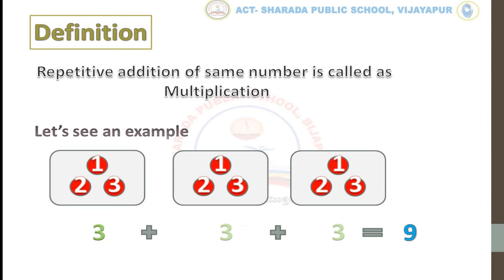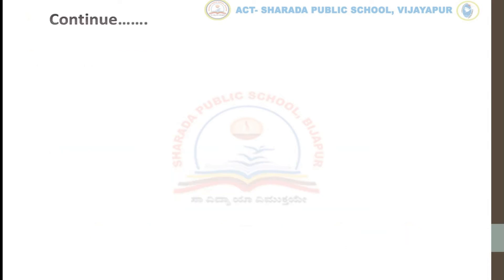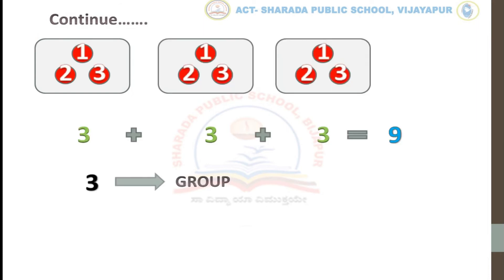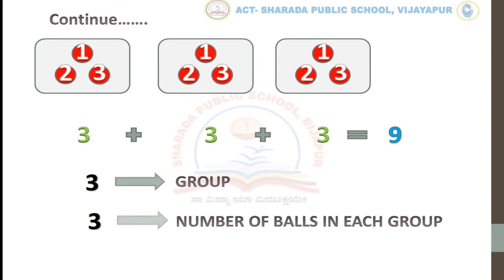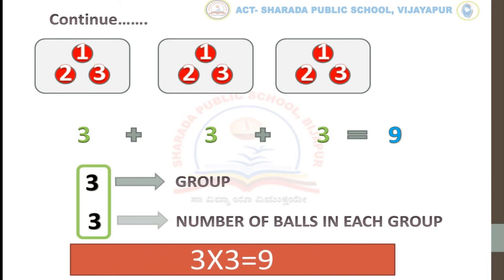Ok children, how many groups are here? Yes, we have 3 groups. In each group we have 3 balls. Now we have to multiply 3 times 3, and then we will get 9. We can get our answers very quickly through multiplication.